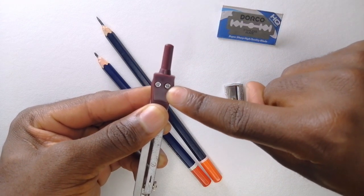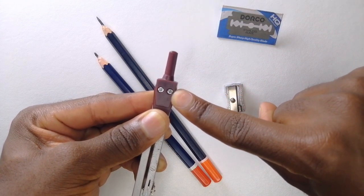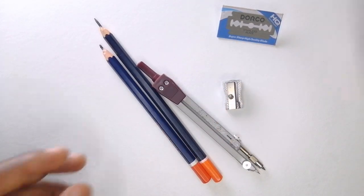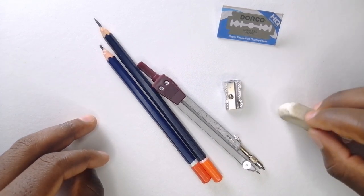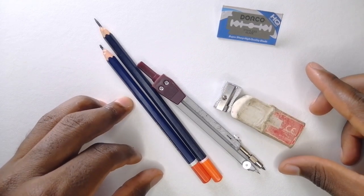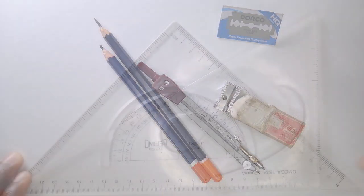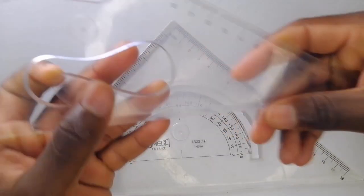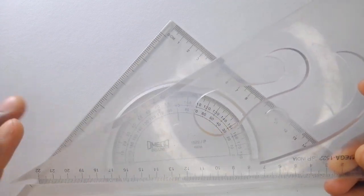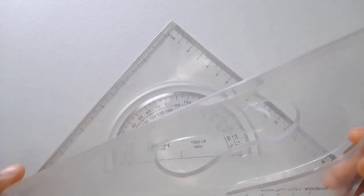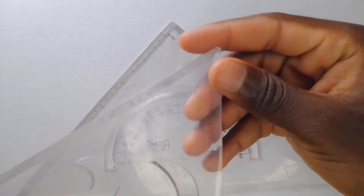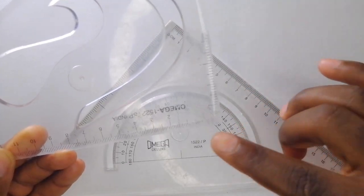You need a rubber, which will help you a lot. Then you need some rulers. This here is a 30-60 set square - it's called that because it's got a 30 degree and a 60 degree angle.